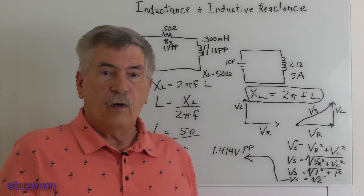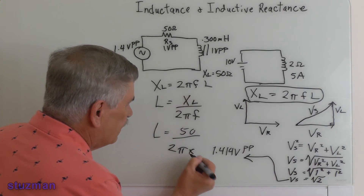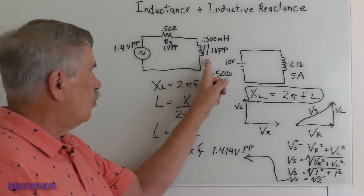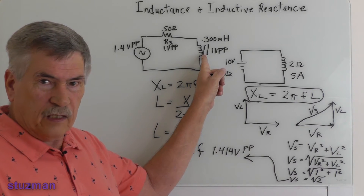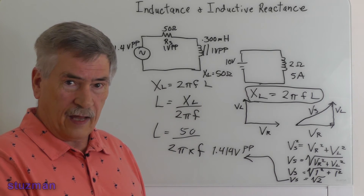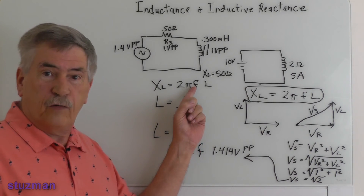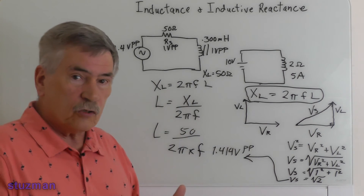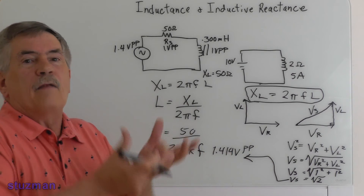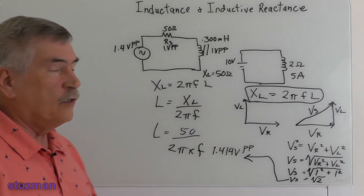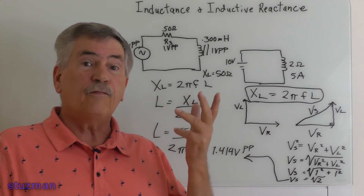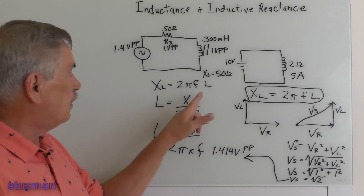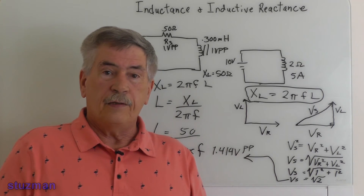2π — pi is 3.14, so 2π is about 6.28. Then we multiply that times our frequency. The frequency is what we're going to adjust to get one volt peak to peak across the inductor. Once we get one volt peak to peak, we'll look at what frequency makes that happen. As frequency goes up, inductive reactance goes up, and the voltage across the inductor goes up. So if we had 1.3 volts across the inductor, we'd need to bring the frequency down to bring the reactance and voltage down. That gives you an idea of what we're going to be doing in the experiment.